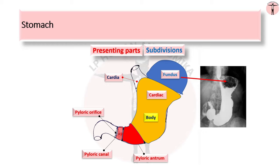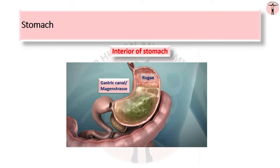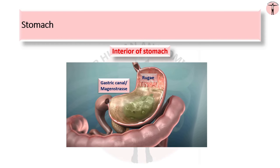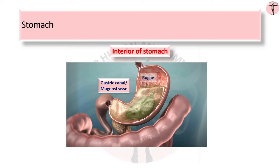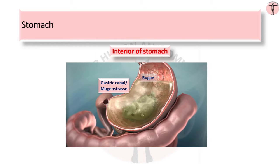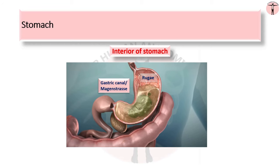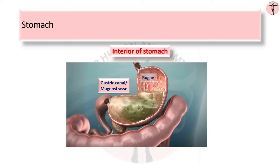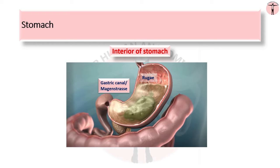The pyloric orifice, the outlet of the stomach, is marked by the pyloric constriction and surrounded by a thickened ring of gastric circular muscle called the pyloric sphincter. It lies just to the right of midline in the transpyloric plane passing through the lower border of the first lumbar vertebra. The mucosa of an empty stomach is thrown into temporary folds called rugae. These are longitudinal along the lesser curvature; when the stomach distends and is full, the rugae disappear. The part of the lumen near the lesser curvature, along with its longitudinal folds, is called the gastric canal or magenstrasse, which allows rapid passage of swallowed liquids. Because of this, it is more prone to peptic ulcers.